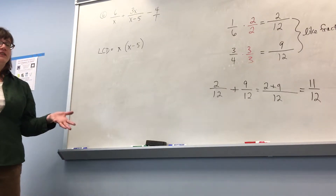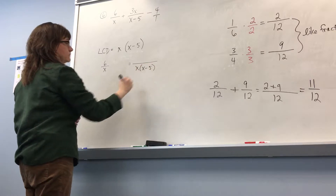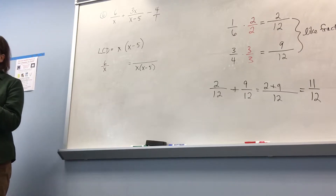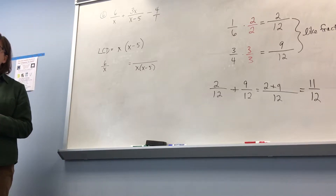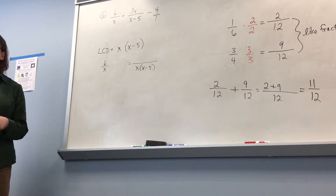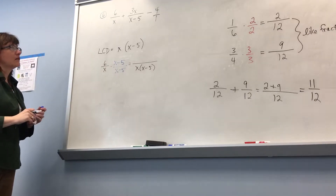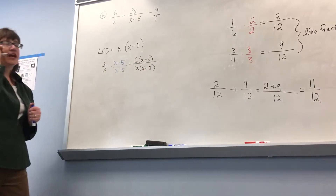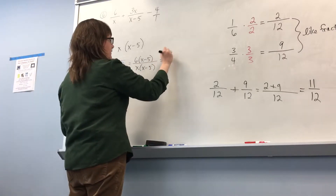Next step is to write each fraction with that common denominator. So I start with 6 over x, leave a space, write the denominator that I want. What can I multiply times what I have to get to what I want — what's missing? x minus 5. So I'm going to multiply by x minus 5 over x minus 5. On the top I'm going to have 6 times the quantity x minus 5. Distributing that gives us 6x minus 30.